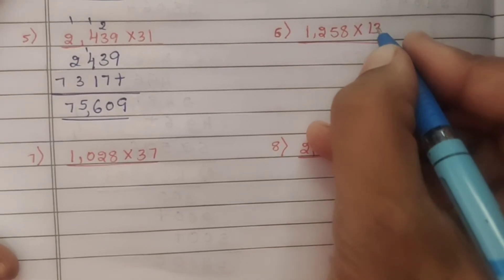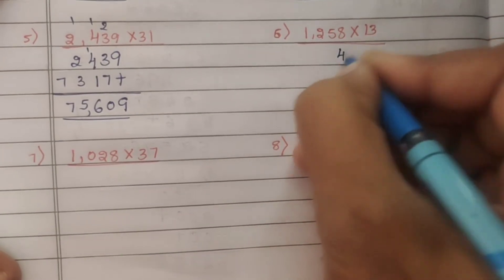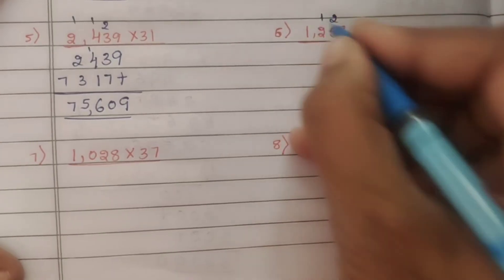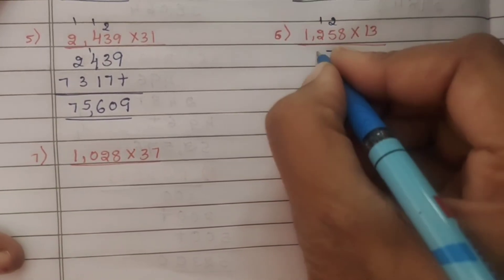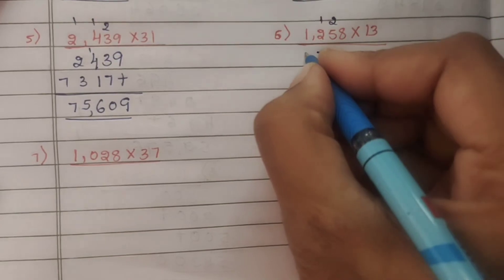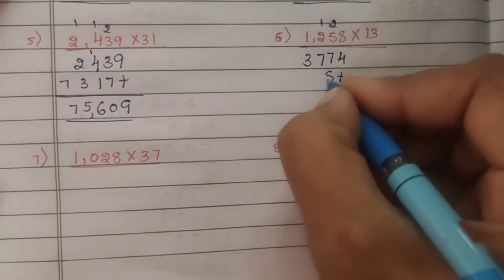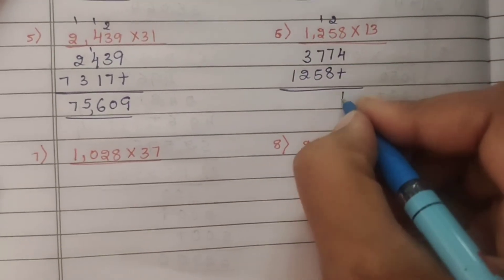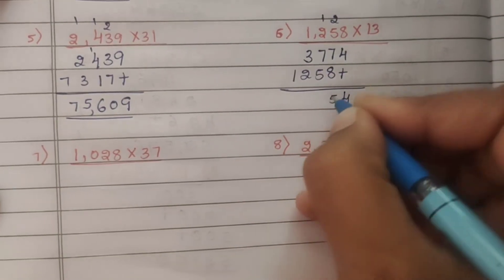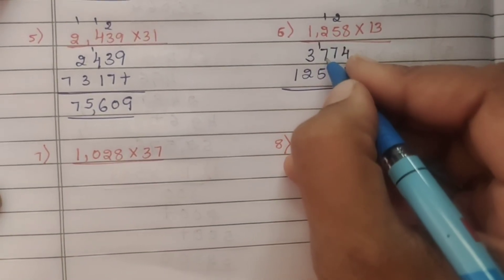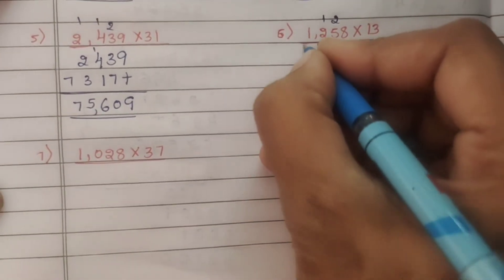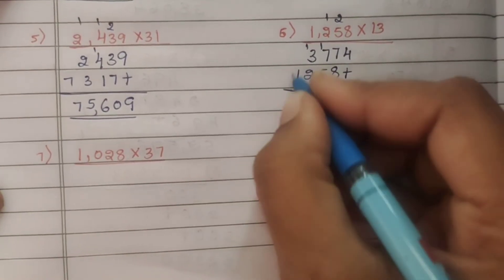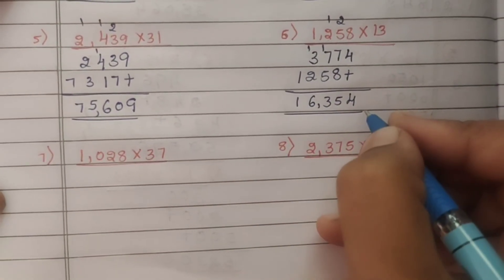Sixth problem: 1,258 into 13. Multiply by 3: 3 eights are 24, carry 2. 3 fives are 15, 15 plus 2 is 17, carry 1. 3 twos are 6, 6 plus 1 is 7. 3 ones are 3. Multiply by 1: 1 eight is 8, 1 five is 5, 1 two is 2, 1 one is 1. Adding: 4, 7 plus 8 is 15, carry 1. 1 plus 7 is 8, 8 plus 5 is 13, carry 1. 1 plus 3 is 4, 4 plus 2 is 6, 1. Answer: 16,354.